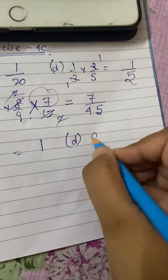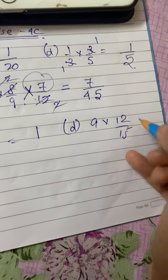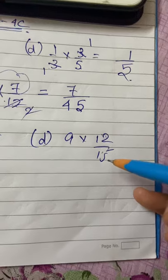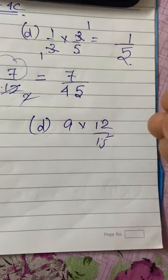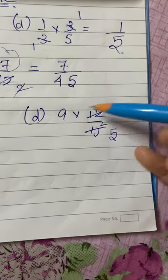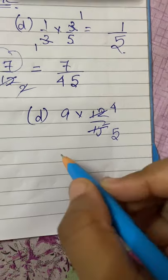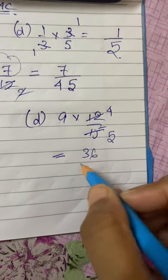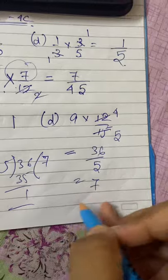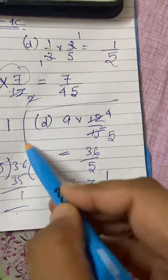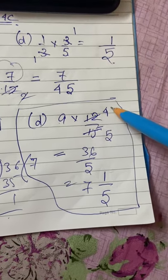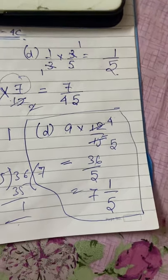Sub-question D: 9 into 12/15. Both 9 and 12 are divisible by 3, and 15 is also divisible by 3, so I can cut either 9 or 12 by 3. Dividing 12 by 3 gives 4, and 15 by 3 gives 5. Now 9 and 4 are not divisible by 5, so I multiply: 9 into 4 = 36, giving 36/5. Converting to mixed fraction: quotient goes here, remainder goes in the numerator, denominator stays — so that is the answer. Remove any common factors first, then multiply numerator with numerator and denominator with denominator.